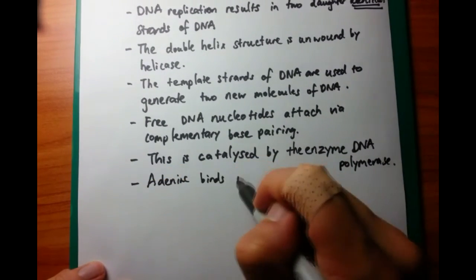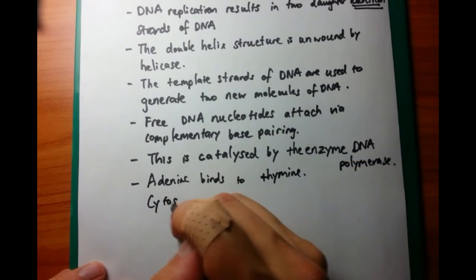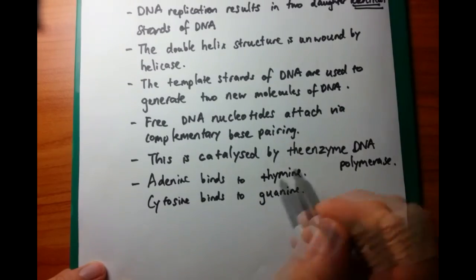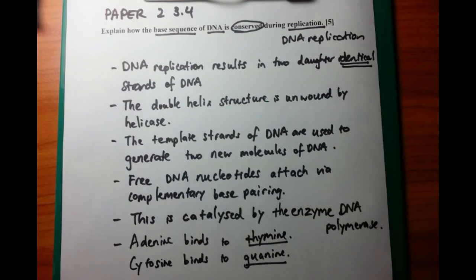And the final thing that we're going to talk about, as I'm writing down right now, is the specifics. So A goes to T, adenine binds to thymine, and cytosine binds to guanine. Be specific about the complementary base pairing and what it is. And that's how I did this question.